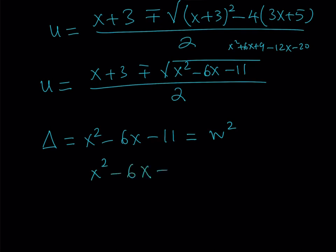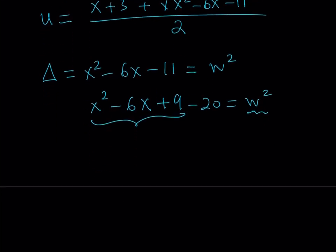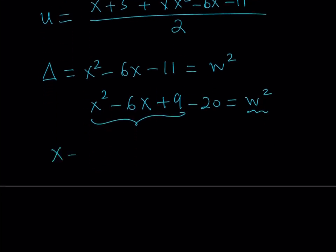So we have x minus 3 squared minus 20 equals w squared, which rearranges to x minus 3 squared minus w squared equals 20. This factors as a difference of two squares: x minus 3 plus w, multiplied by x minus 3 minus w, equals 20. And since we're looking for integer solutions, we can factor 20.